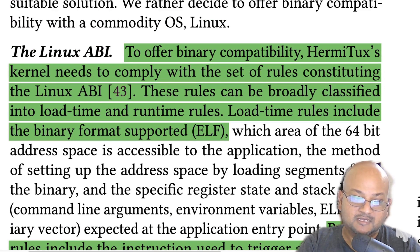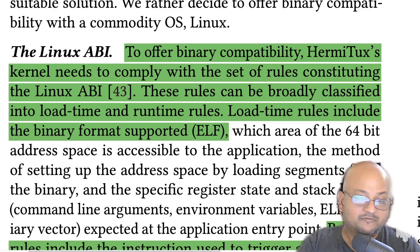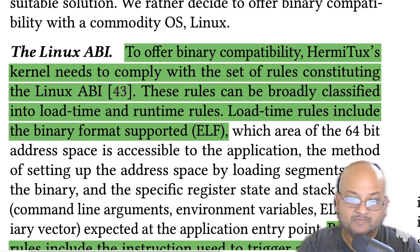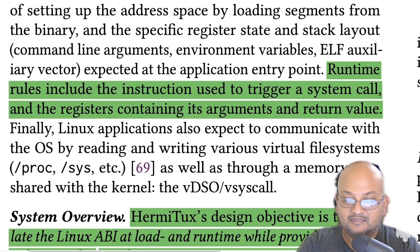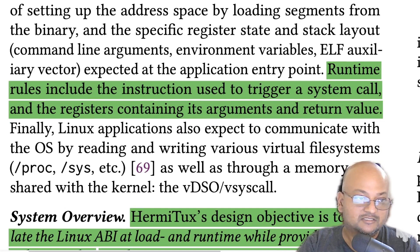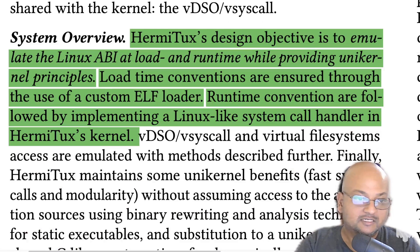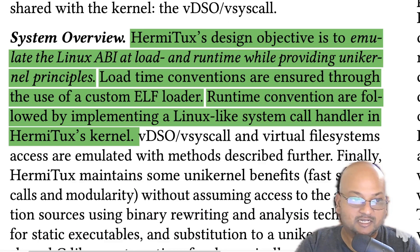If you look at what it takes to run an arbitrary Linux binary, you basically need to provide two sets of abstractions: load time abstractions and runtime abstractions. The load time abstractions basically mean support for Linux's binary format, which is ELF. And the runtime abstractions consist of everything it takes to support making system calls to the underlying operating system. Together, these two sets of abstractions — the load time abstraction and the runtime abstraction — make up what is known as the Linux ABI, Linux's application binary interface.